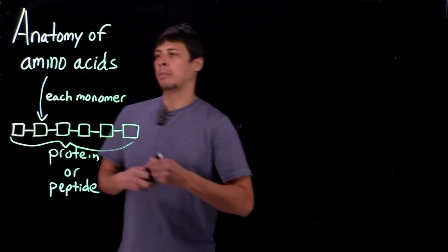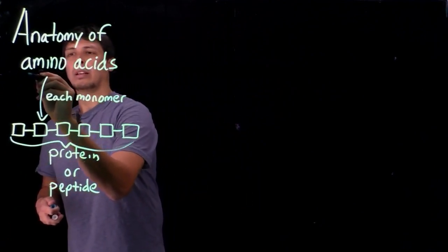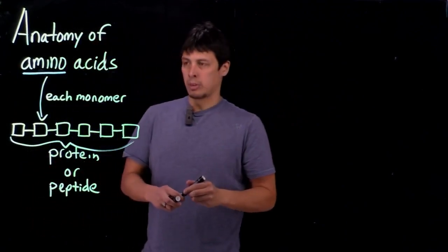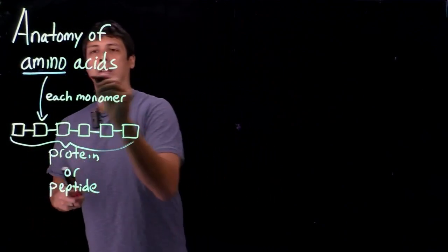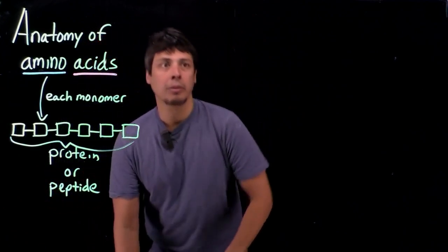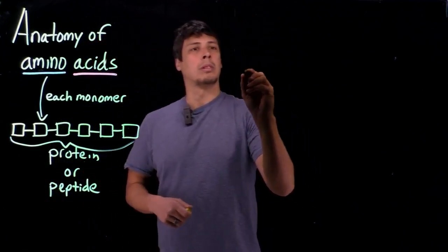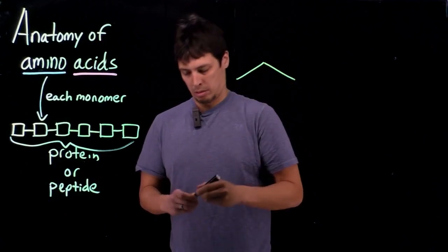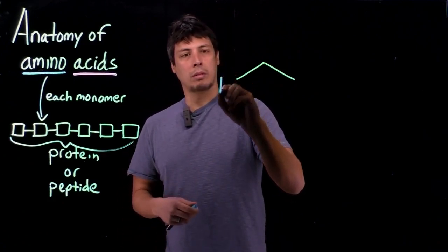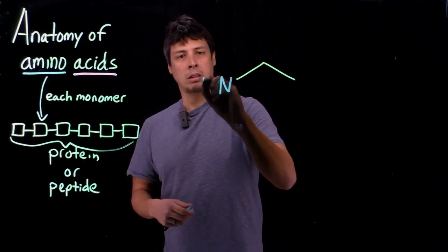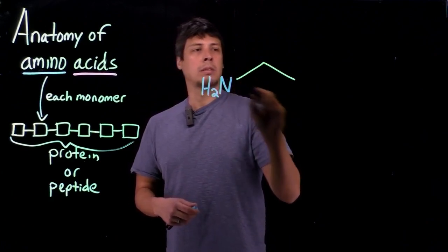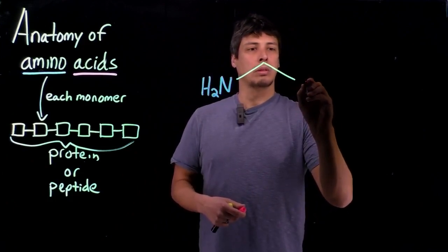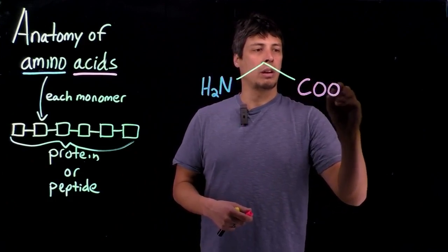And so if we just look at the name, amino acid, it indicates two things about structure. One, there's an amine group, and two, there's an acid group. So let's look at a general structure. So we'll draw it like this, the amine group, just for simplicity, we'll draw on the left-hand side. And the carboxylic acid group, we'll draw on the right-hand side.